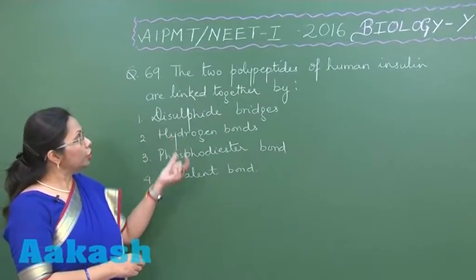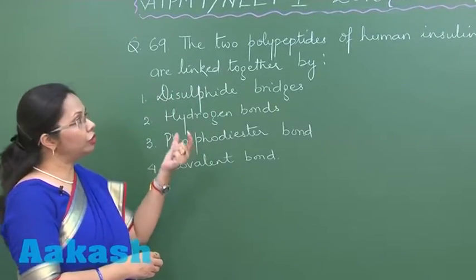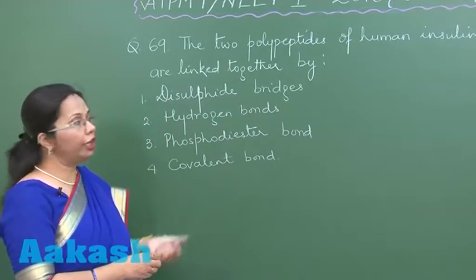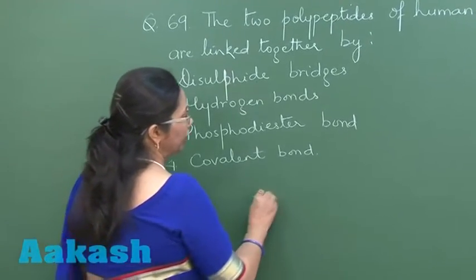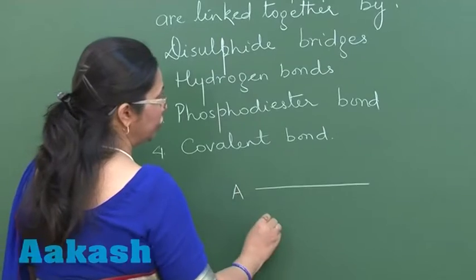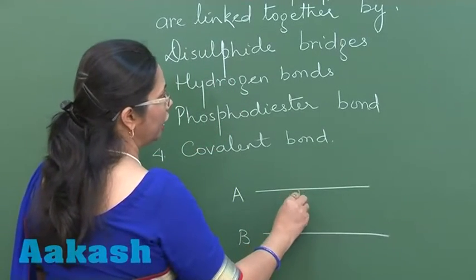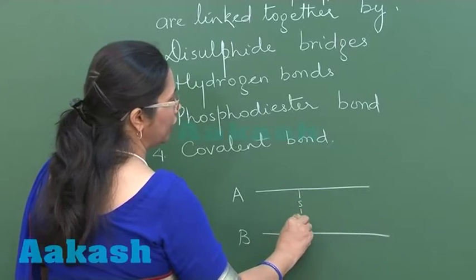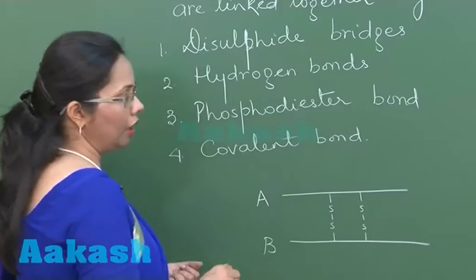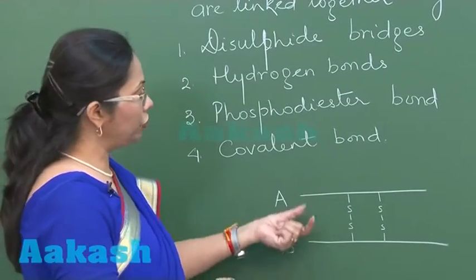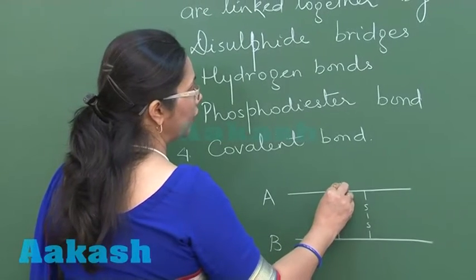In this question, the two polypeptide chains of human insulin are linked together. The two polypeptide chains are called the A chain and the B chain, and these chains are linked by disulfide linkages. Between the A and B chain there are two disulfide linkages, and there is one intra-chain disulfide linkage on the A chain.